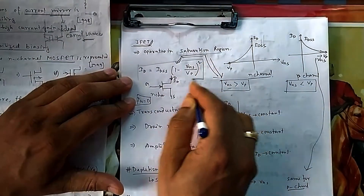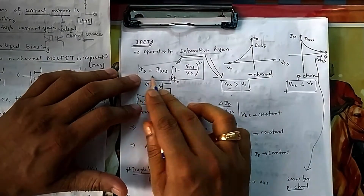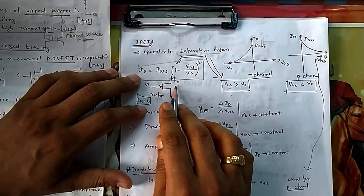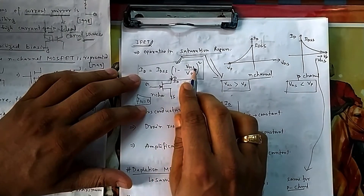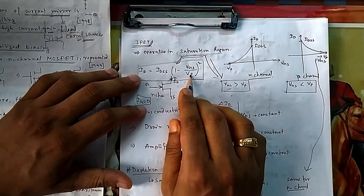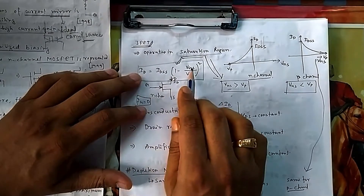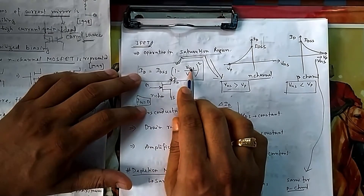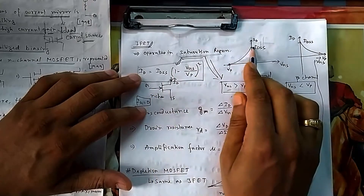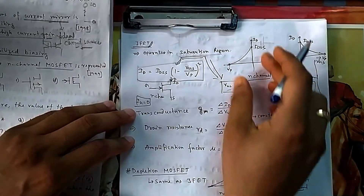The drain current equation for JFET in saturation region depends only on V_GS — the other quantities are fixed and will be given. Maximum I_D occurs when V_GS is zero, at which point I_D equals I_DSS.